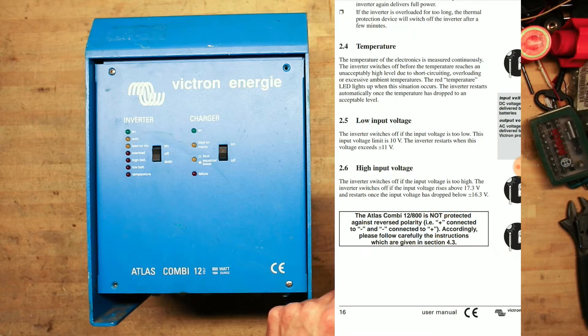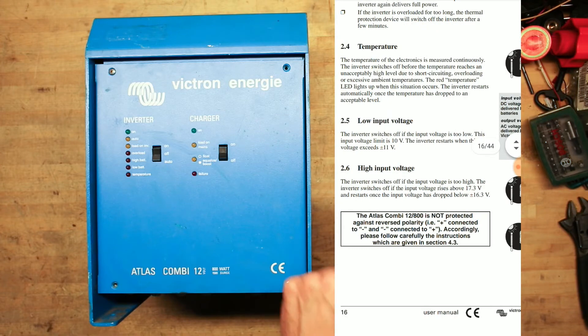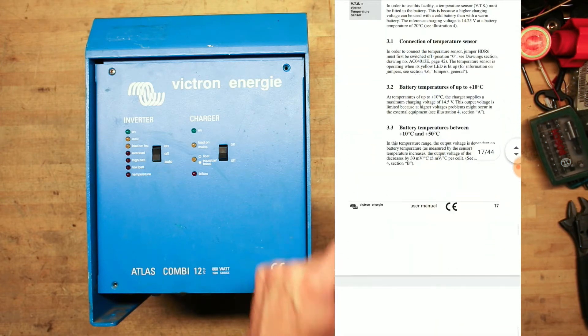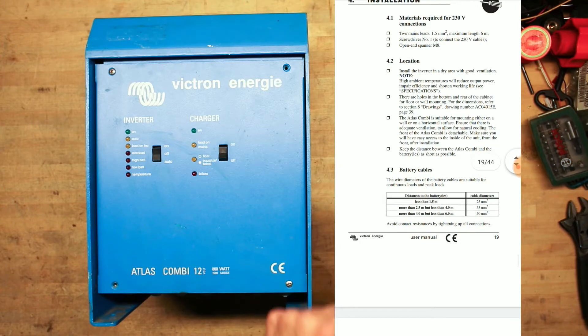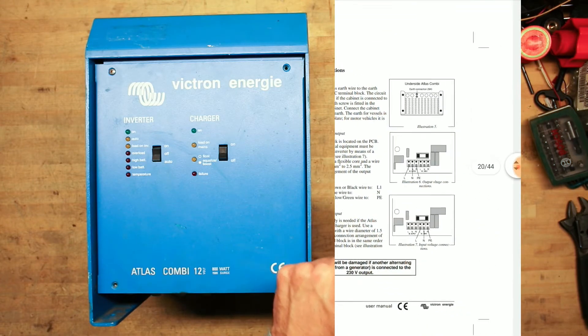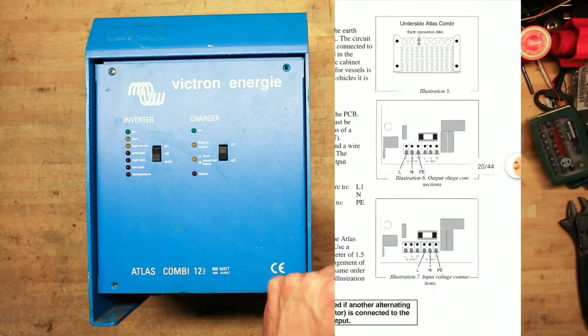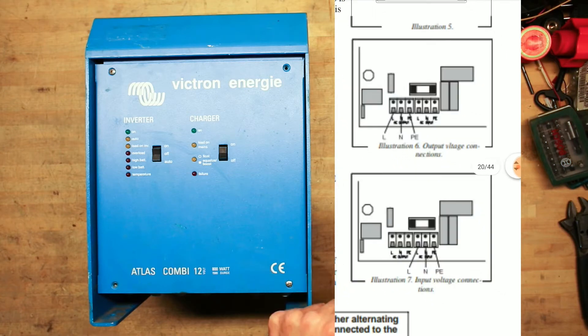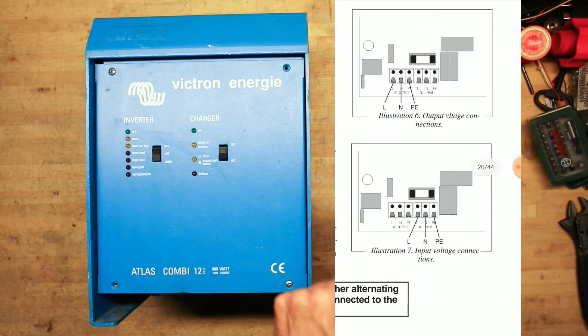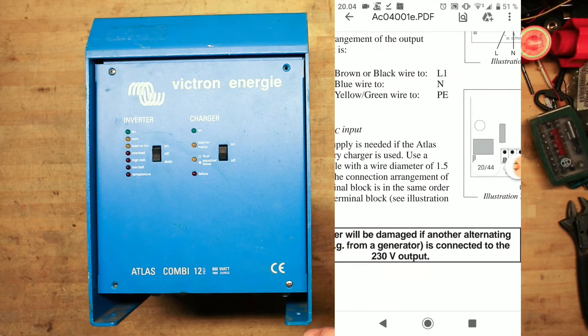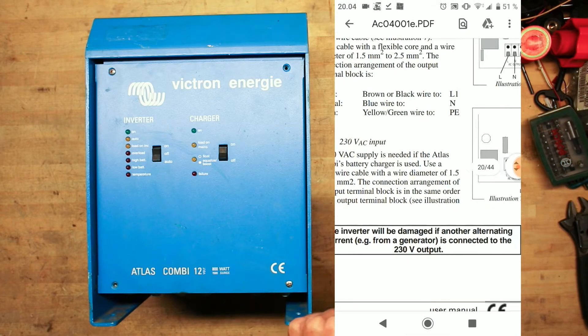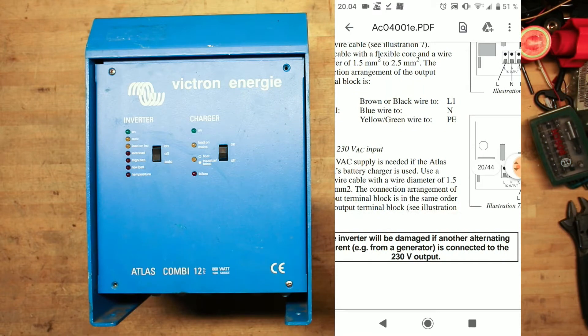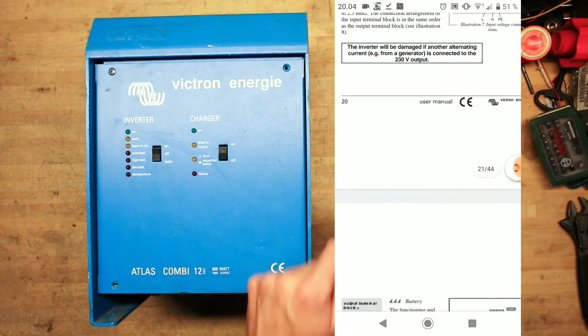It's not protected against reverse polarity. That's pretty important. Here are the connections. Output voltage connections to the left. Input voltage connections to the right. The inverter will be damaged if another alternating current is connected to the 230 volt AC output. So let's not do that.